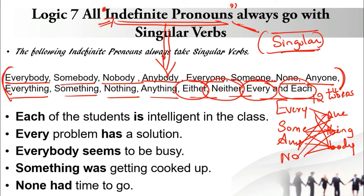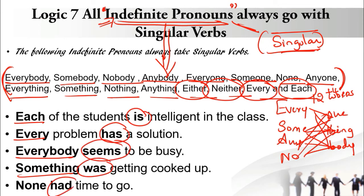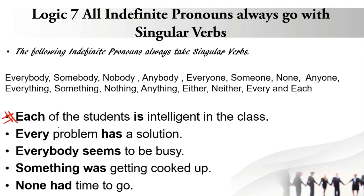Whenever a sentence starts with any of these indefinite pronouns, the verb will be — and should be — singular. Look at the first sentence: 'Each of the students is intelligent in the class.' The word 'students' attracts us and being plural might lead us to say 'are,' which would be wrong. Go back to the pattern from Logic 3 with 'one of.' The subject here is not 'students' — the subject is 'each,' which is an indefinite pronoun and always singular.